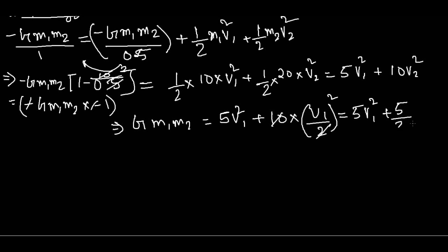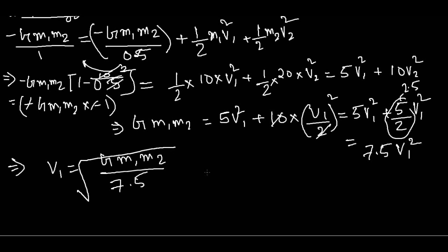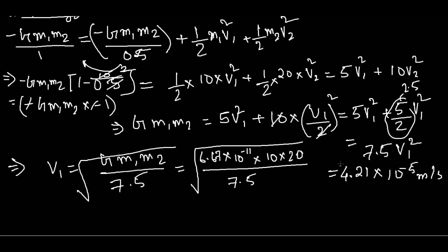So this is nothing but 2.5, so I can write 7.5 V1 square. Now from this I can easily solve for V1. V1 is the square root of G M1 M2 divided by 7.5. G is 6.67 into 10 to the power minus 11, M1 is 10, M2 is 20, and we have 7.5 below. After calculating this entire thing, what I get is V1 equals 4.21 into 10 to the power minus 5 meters per second.